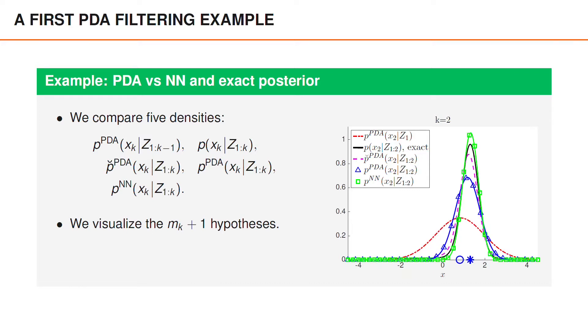Given the measurement at time 2, it is much more unlikely that the measurement at minus 1.3 was an object measurement. And the nearest neighbor algorithm is actually quite an accurate approximation to the posterior, whereas the PDA filter overestimates the uncertainties slightly. At time 3, P-breve is again bimodal, and the uncertainties according to the PDA filter are much larger than according to the nearest neighbor filter.